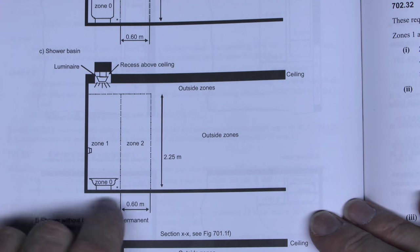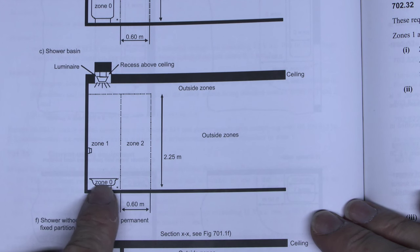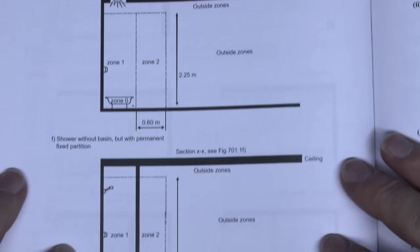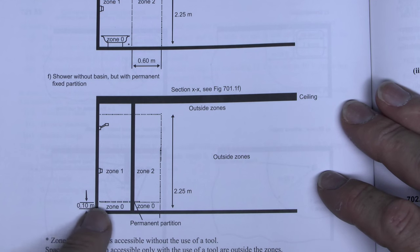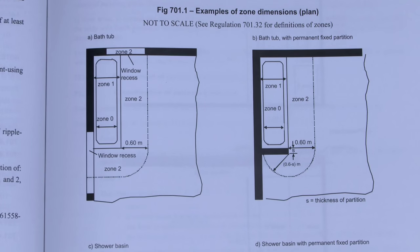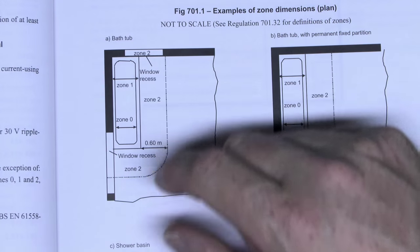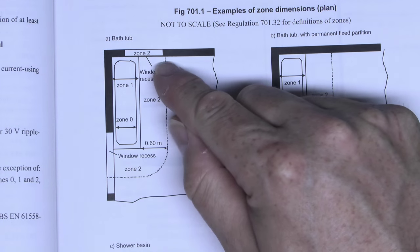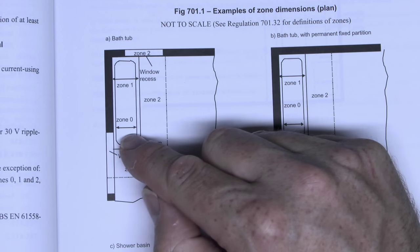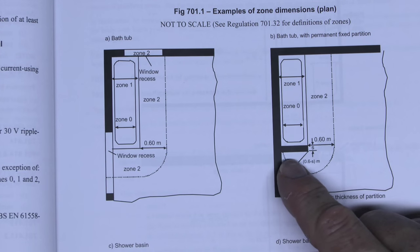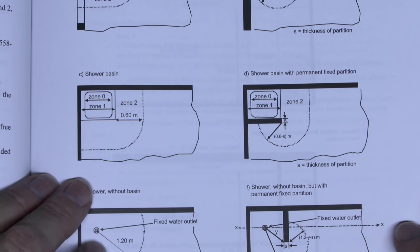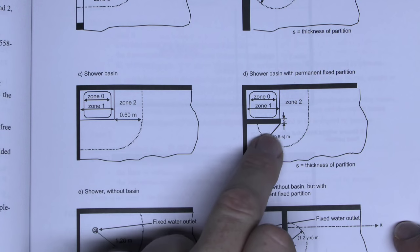Looking at the shower equivalent, it's very much the same: zone 0 is within the actual shower itself, zone 1 is above, and zone 2 is the 60 centimetres from the edge of that — the same height applies. Looking at those from above in a plan view, the 0.6 metres extends all the way around the bath, so it's any point within 60 centimetres of the edge. Zone 1 covers the entire area over the bath and zone 0 is within the bath itself. With a fixed partition, it's a 60 centimetre radius from the edge of that partition.